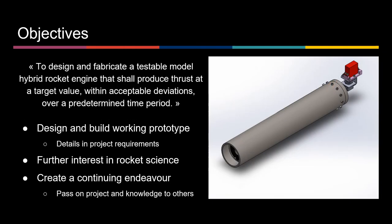The main objective of this project was to design and fabricate a testable model hybrid rocket engine that shall produce thrust at a target value within acceptable deviations over a predetermined time period. This means that we want to design and build a working prototype and then test it to validate our requirements.